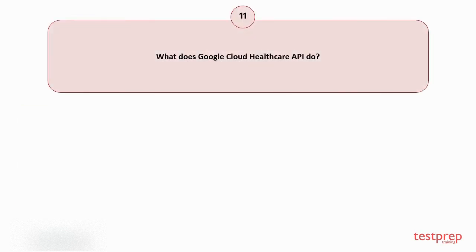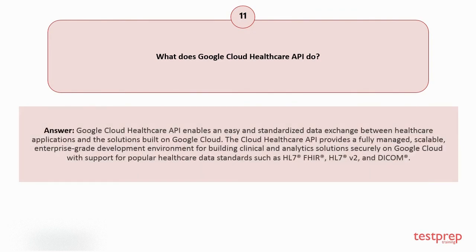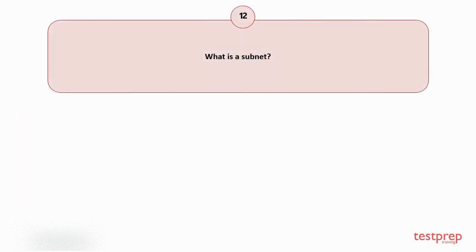Question number eleven: What does Google Cloud Healthcare API do? Google Cloud Healthcare API enables easy and standardized data exchange between healthcare applications and solutions built on Google Cloud. It provides a fully managed, scalable, enterprise-grade development environment for building clinical and analytics solutions securely on Google Cloud, with support for popular healthcare data standards.